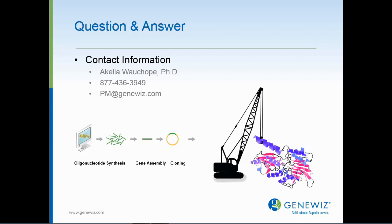The next question is: I'm working with a novel model system that is not listed as one of your choices. How can I get my sequence optimized? Great question. As long as the codon optimization table is available, we can certainly facilitate your request. In the event that a codon optimization table has not yet been made available, we can certainly work alongside the client to further accommodate your request.